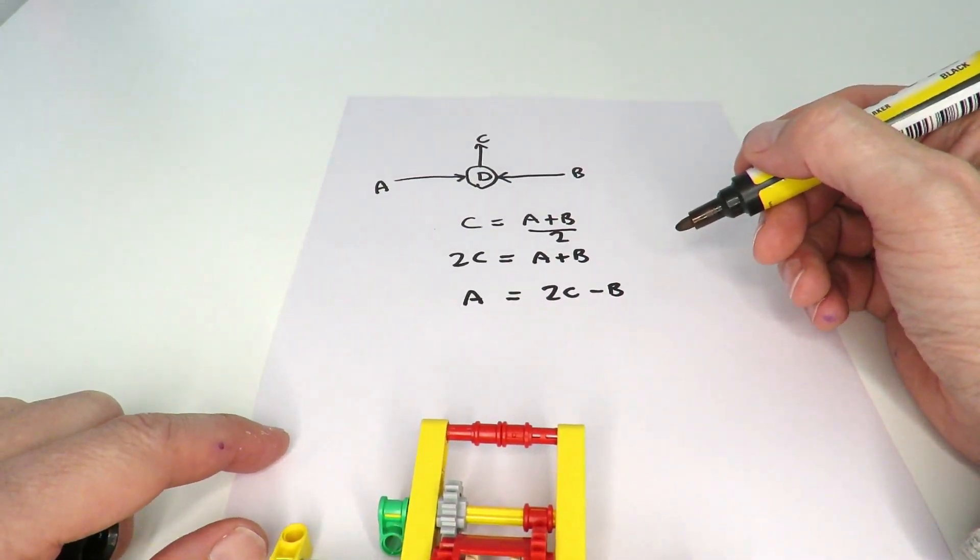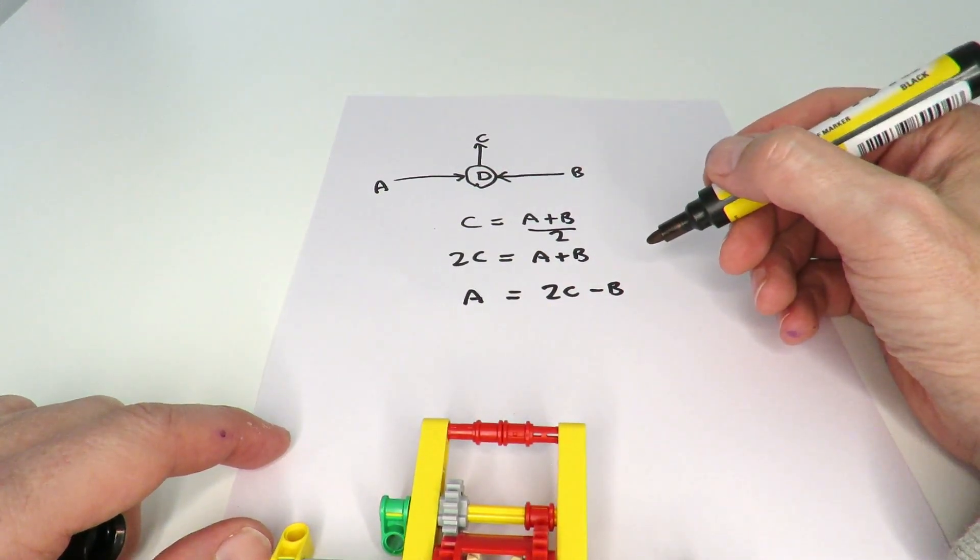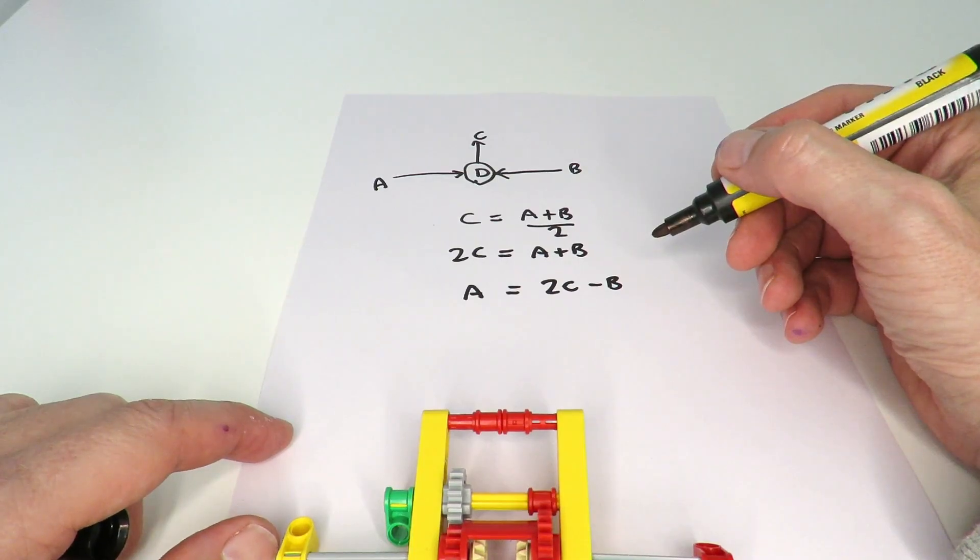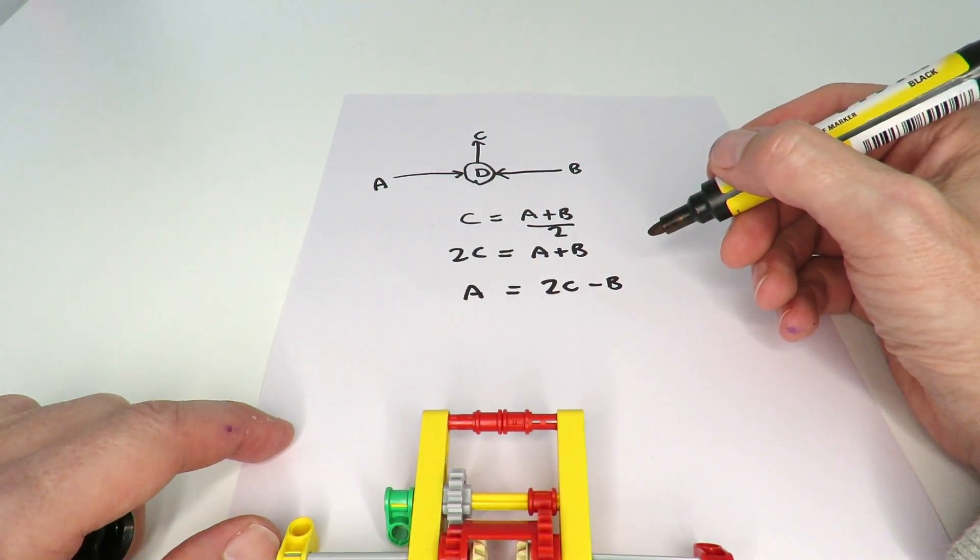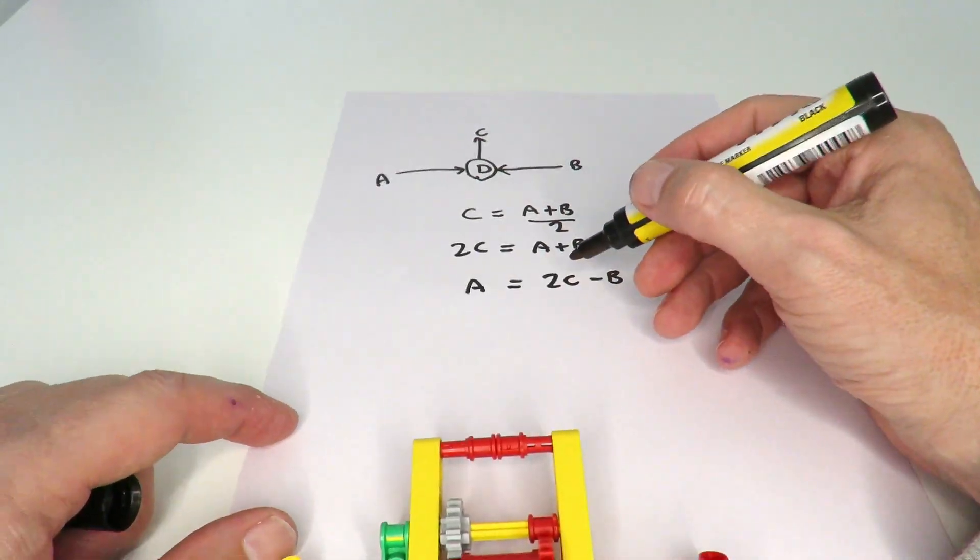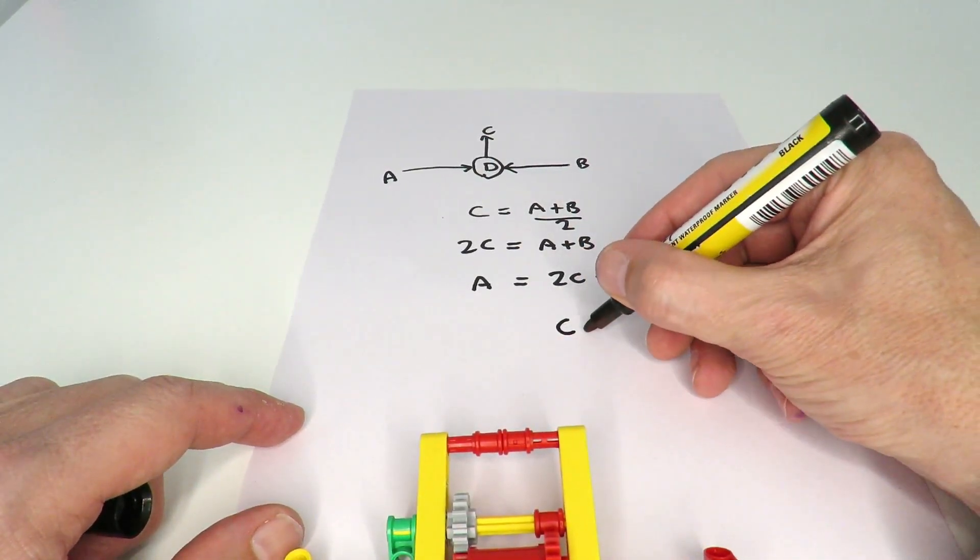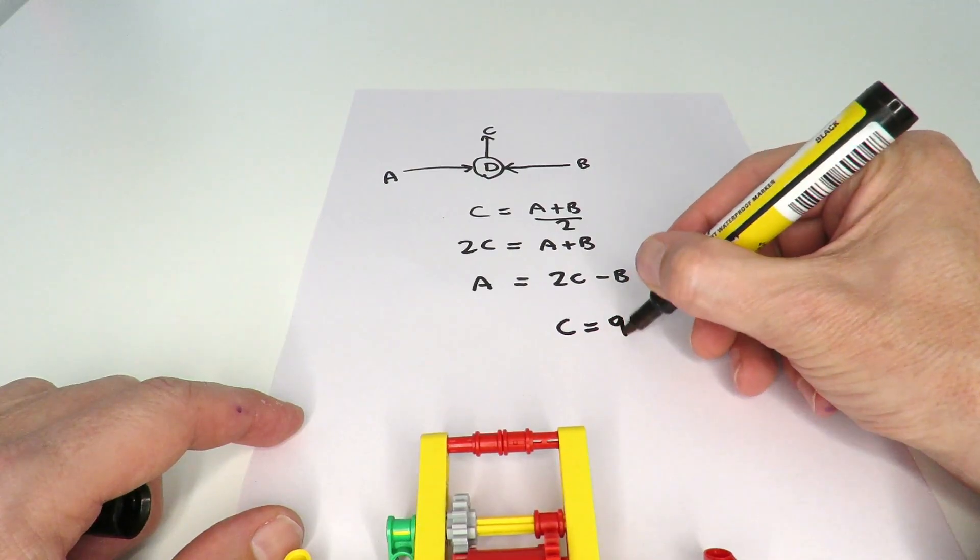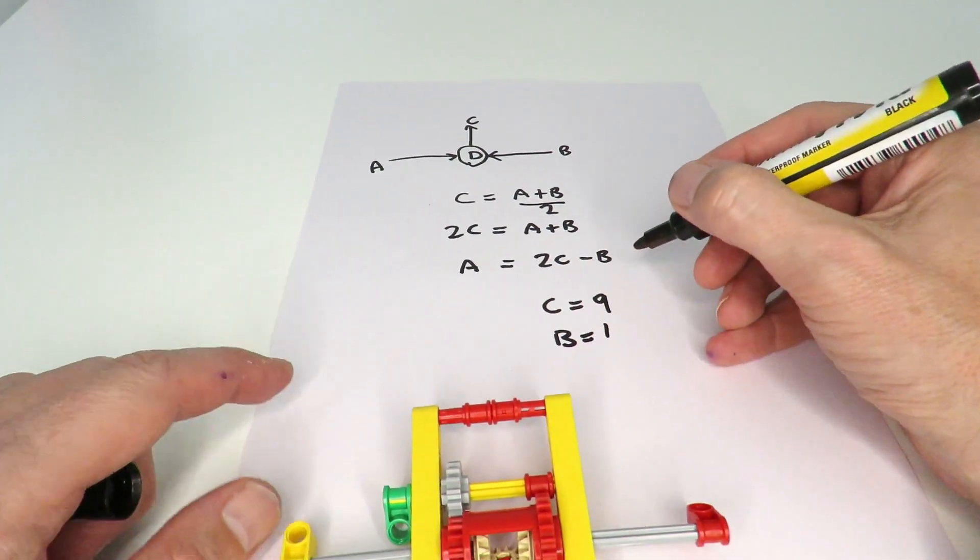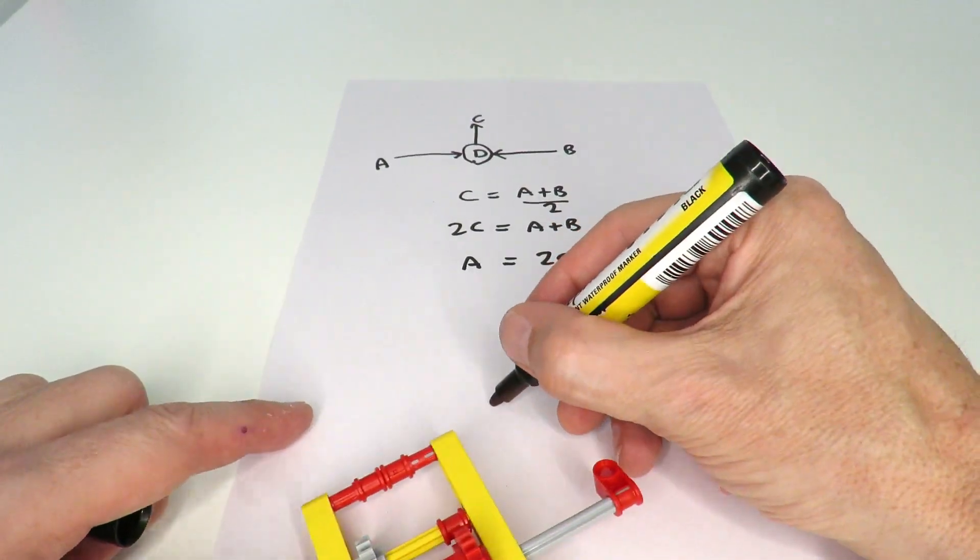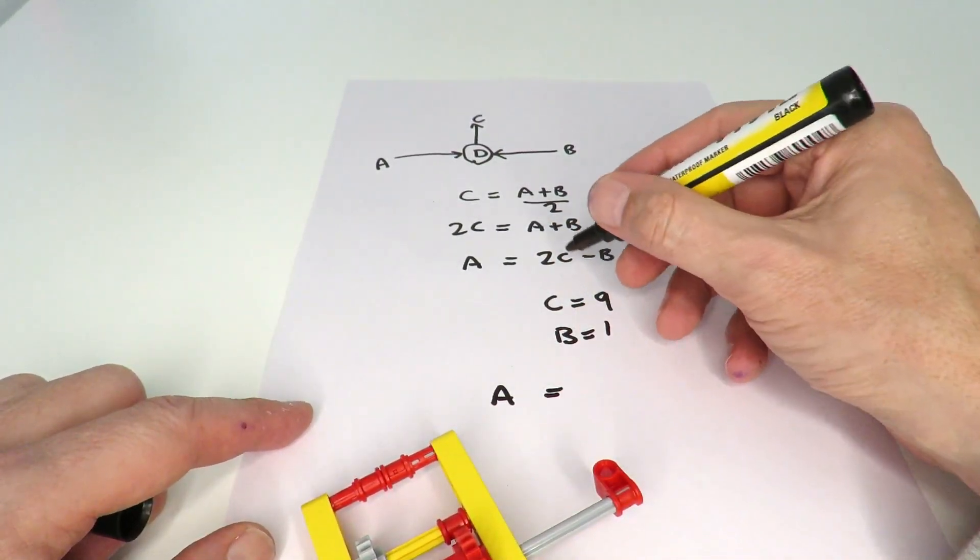That we might otherwise not be able to create just using the standard Lego Technic gears using the 2, 3, 5, or 7 ratios. So, for example, if we use C equal to 9 and B equal to 1, then we get A is equal to 2 times C, which is 18, minus 1, which is 17.